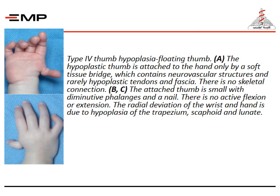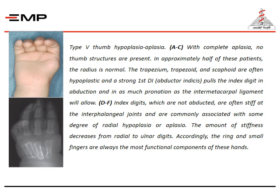Type four thumb hypoplasia — floating thumb: the hypoplastic thumb is attached to the hand only by a soft tissue bridge which contains neurovascular structures and rarely hypoplastic tendons and fascia. There is no skeletal connection. Type five thumb hypoplasia is aplasia: with complete aplasia, no thumb structures are present.